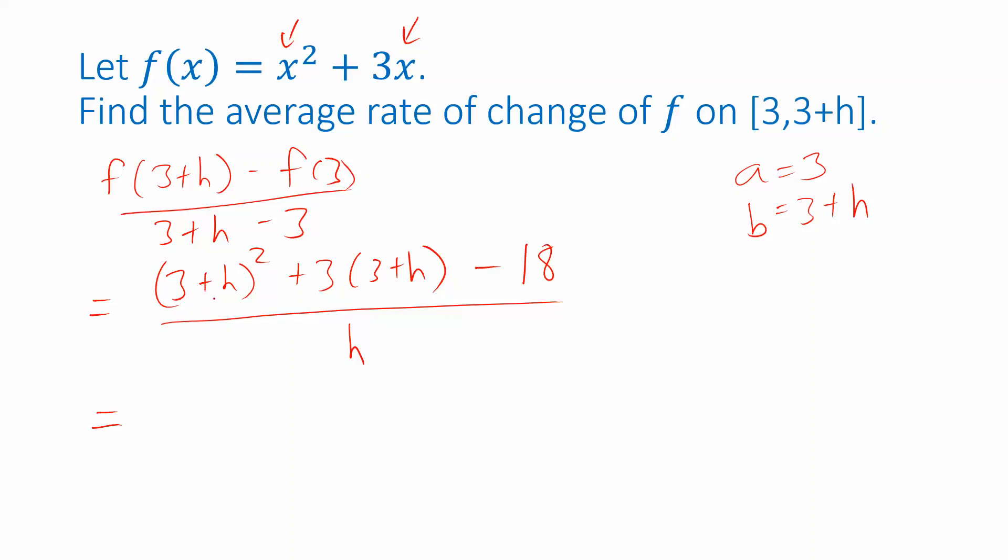Now in order to simplify in the numerator I'm going to have to expand this quantity 3 plus h quantity squared. So to do that I have 3 squared which is 9. I have 3 times h plus h times 3 so that's 6h plus h squared. So what I really did here was to foil out 3 plus h times 3 plus h. Now if we try to simplify 9 plus 9 minus 18 those cancel out. 6h plus 3h is 9h plus h squared.